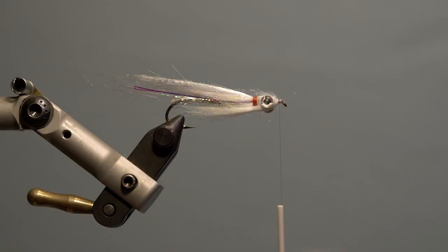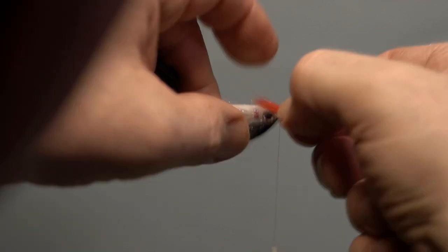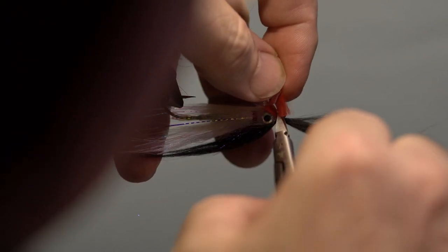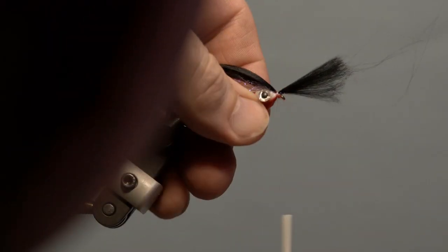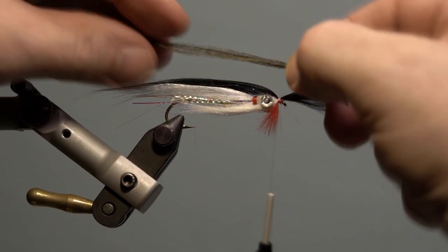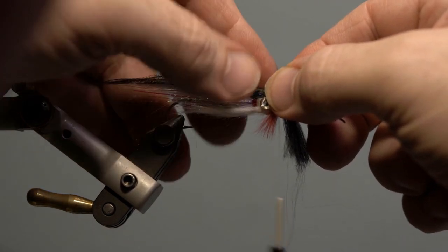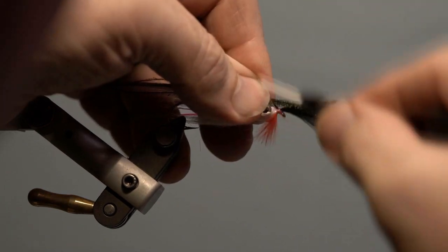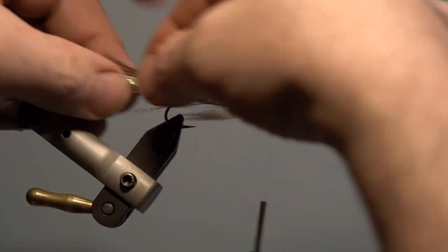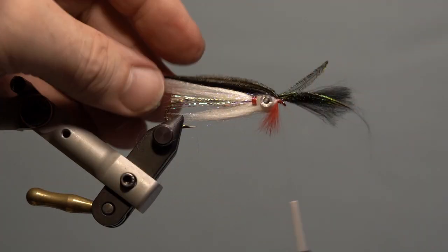Next, add black polar fiber for the top wings. Take a small section of red rabbit strip with the hide attached for the throat and tie it underneath. Secure and trim the hide. Next, add three or four strands of peacock curl and tie it in on the top of the black polar fiber, slightly longer. This gives the fly an overall neat taper.